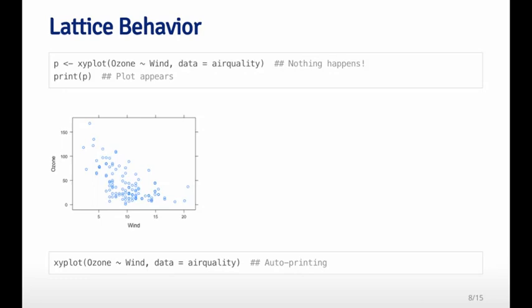You can see this lattice behavior in this simple bit of code. Here I'm calling the xyplot function, saving to an object called P, and then I'm printing P, and that's when the plot appears. If you run this code after the first line of code, nothing will happen. But after the second line, the plot will appear. If you just call xyplot, then we use what's called the auto printing feature of R.